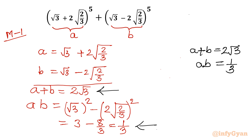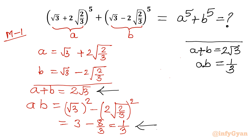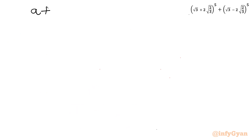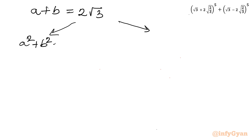What we have to calculate is a⁵ + b⁵. To evaluate this expression, I will consider (a + b)² and (a + b)³. So a + b = 2√3. Squaring gives a² + b² + 2ab = 12, since (2√3)² = 12.